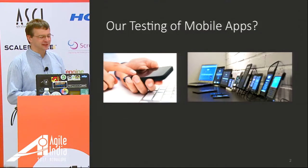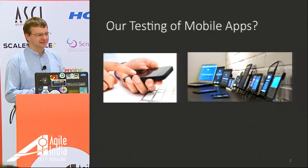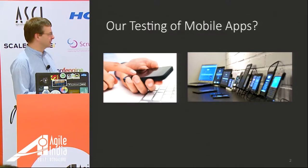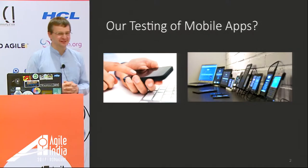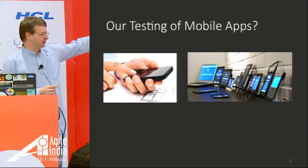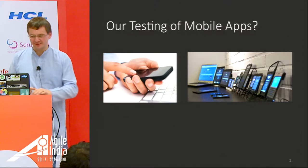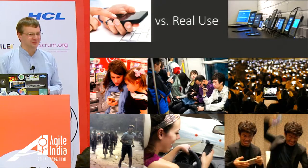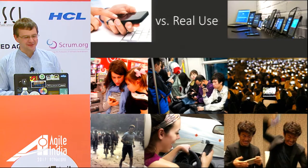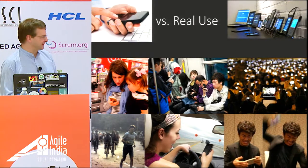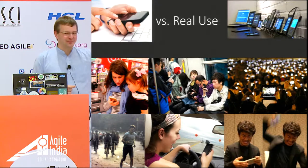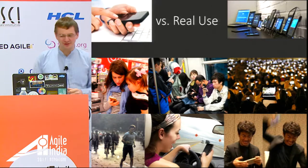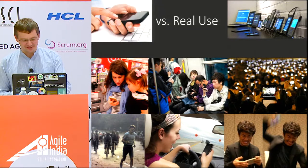This is how many of us test mobile software: beautiful, clean, elegant. If we're rich, we have lots of devices. But this is how I actually use software — like the man at the bottom — that's what happens when our software isn't quite as good as we'd like it.